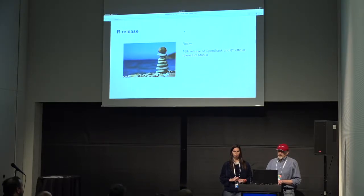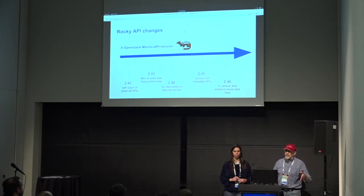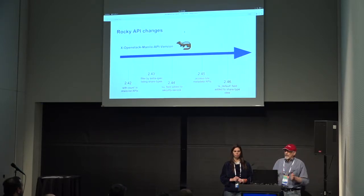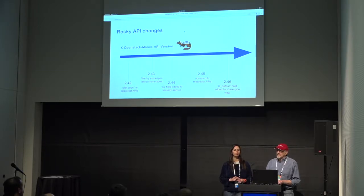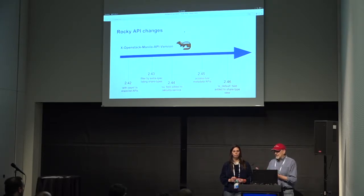In the Rocky release, Manila's API is microversioned — we maintain backwards compatibility always. I'm just showing that we had a few API changes here; we'll talk about the features that went along with them. So if we change a feature and need to extend the API or do something, we microversion it, and when you interact you can negotiate which version you're working with.